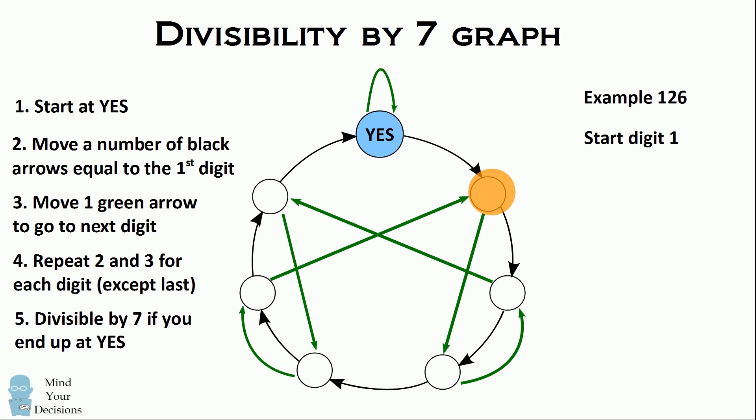Before we get to the next digit, we move one green arrow which brings us to a different circle. Now we look at the next digit in the number, which is two. We move two black arrows to get to the next circle. Before we go to the last digit, we move one green arrow to get to another circle.